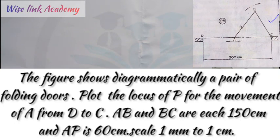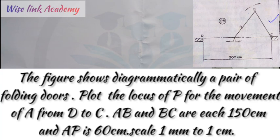Plot the locus of P for the full movement of A from D to C. AB and BC are 150 cm. AP is 60 cm. Scale: 1 mm to 1 cm.